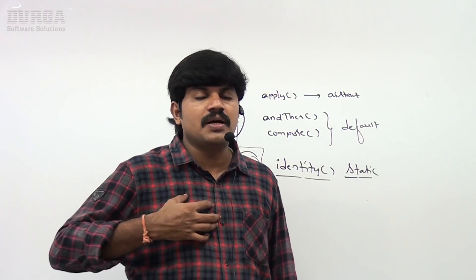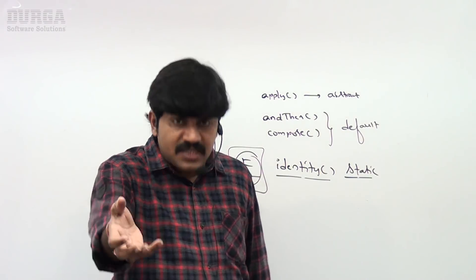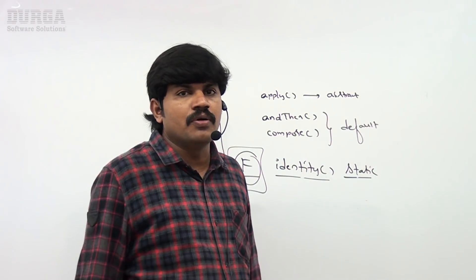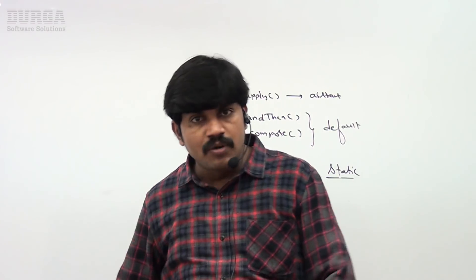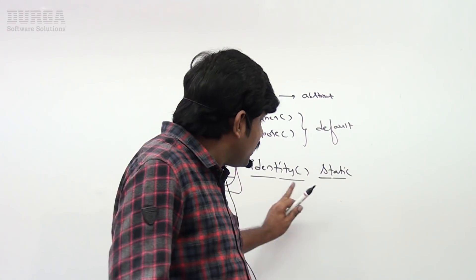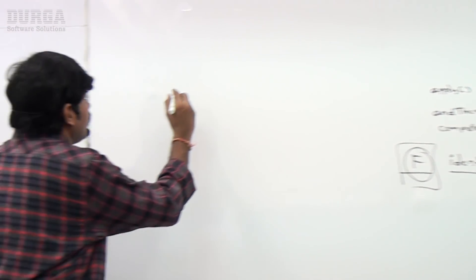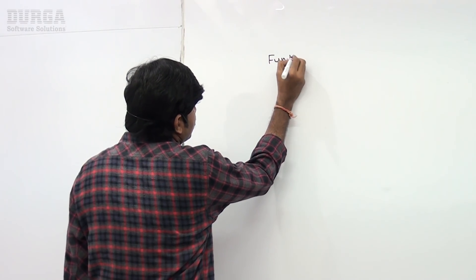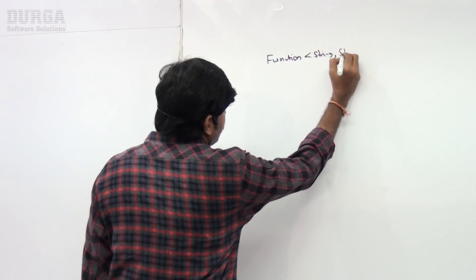Why would I want identity? Identity of a value is nothing but the same value. It is very rare that we are going to use it — if I give 'duruga', my function is going to return 'duruga' only. There is not much use for it, but this type of method exists. Observe carefully: I want a function of type Function<String, String>.